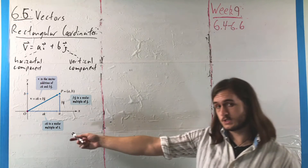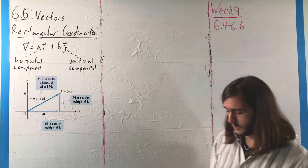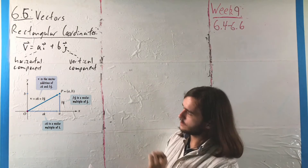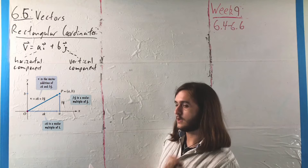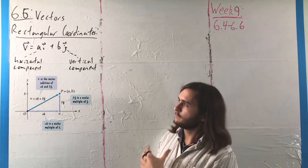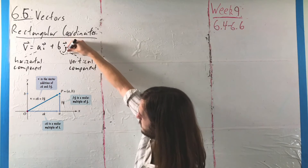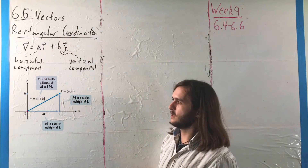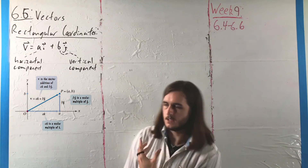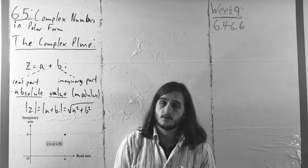If you do that, you end up with a construction something like this — a right triangle where the magnitude describes that radial distance measurement. We can look at the components in terms of a horizontal component A and a vertical component B. That should look familiar, not just because we've seen right triangles many times, but because it's essentially the same way we talked about complex numbers in terms of their real and imaginary components.